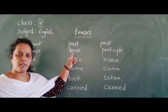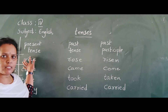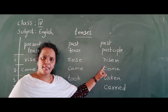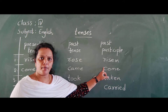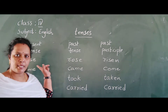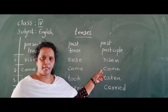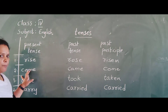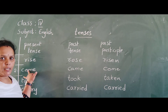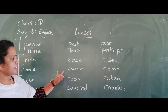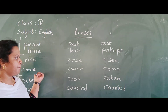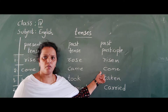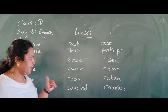Rise — R-I-S-E. Rose — R-O-S-E. Risen — R-I-S-E-N. Present tense, past tense, past participle — like that. Next: Come — C-O-M-E. Came — C-A-M-E. Come past participle is also Come — C-O-M-E.